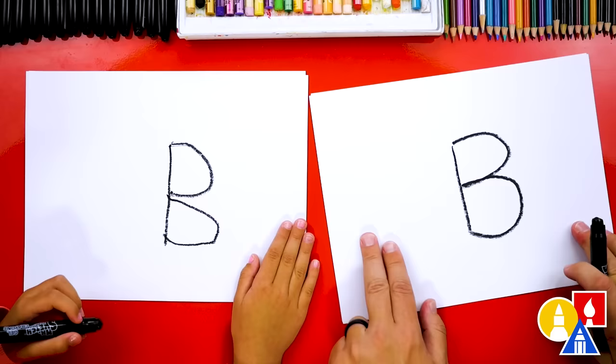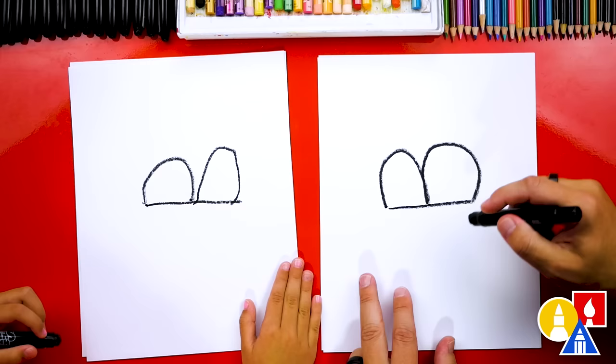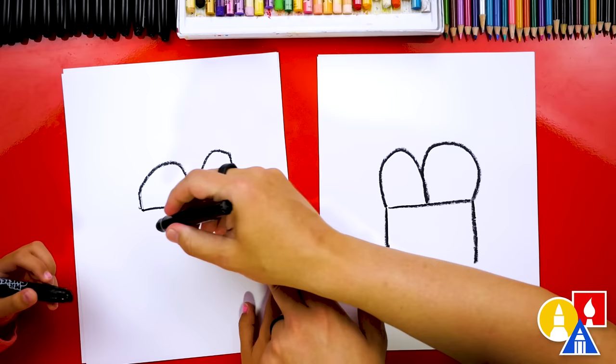Now let's turn our paper sideways. The letter B is our wings for our bee. It looks like an M. It does. Now it looks like an M. Let's draw two lines down to draw the body of our bee. You know, body starts with a B too.